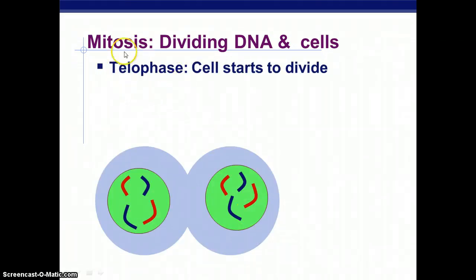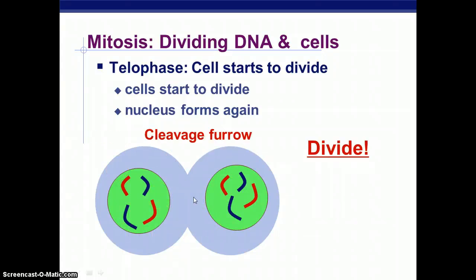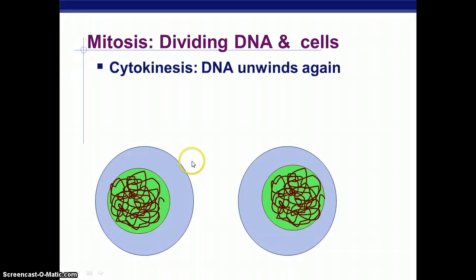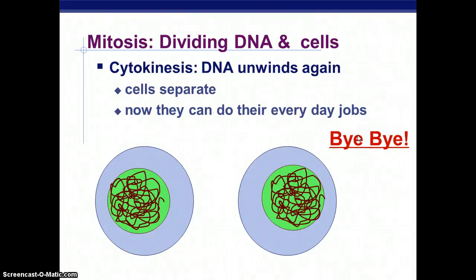The final stage of mitosis is telophase. This is where the cell actually starts to divide, and you can see that the nuclei have formed again. We have almost two new cells, but they are still slightly attached — this is called the cleavage furrow, where the cell has started to pinch in but is not completely divided. The actual final stage is cytokinesis, where the cells are completely separated and the DNA is unwound, resulting in two new cells ready to do whatever they are required to do.